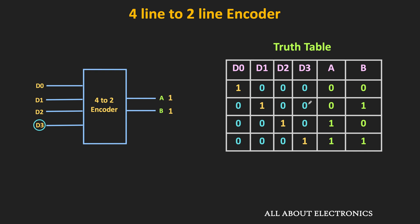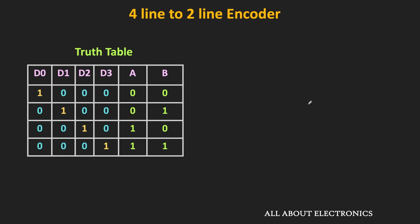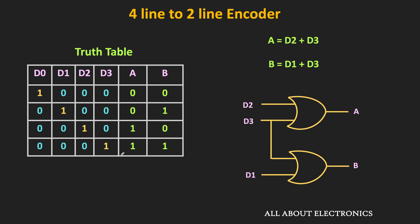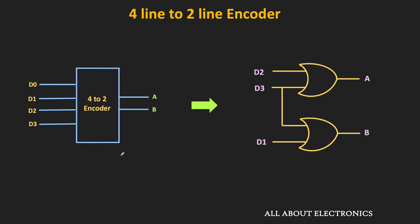Now let us see the logic circuit of this 4-line to 2-line encoder. From the truth table, output A is high when either D2 or D3 is high, so the logical expression for A is D2 + D3. Output B is high when either D1 or D3 is high, so the logical expression for B is D1 + D3. These two expressions can be implemented with OR gates, giving us the logic circuit of this 4-line to 2-line encoder.